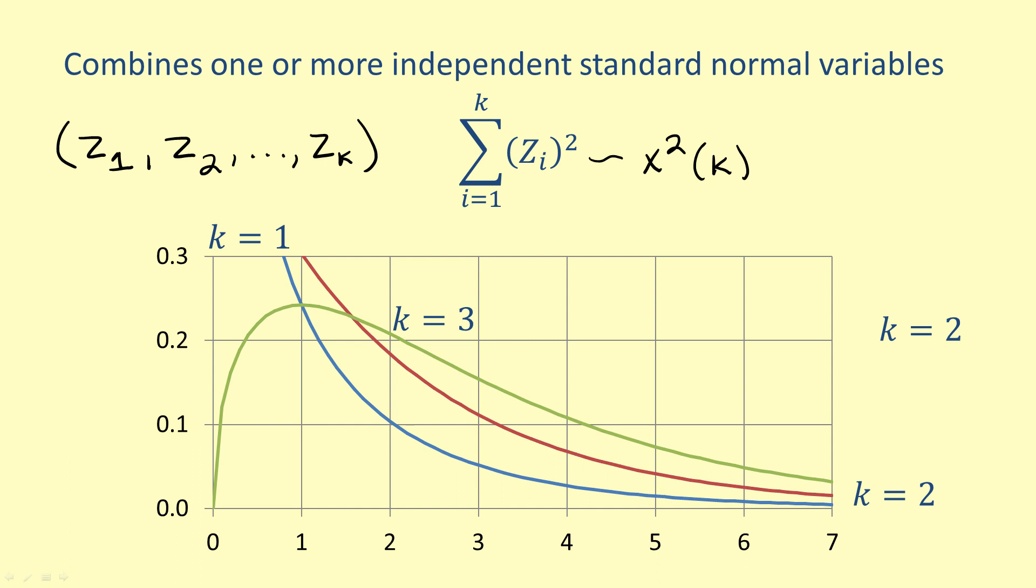As the degrees of freedom are increased further, the position of the peak moves to the right and the curve generally becomes flatter. The curve for five degrees of freedom has a peak at three.